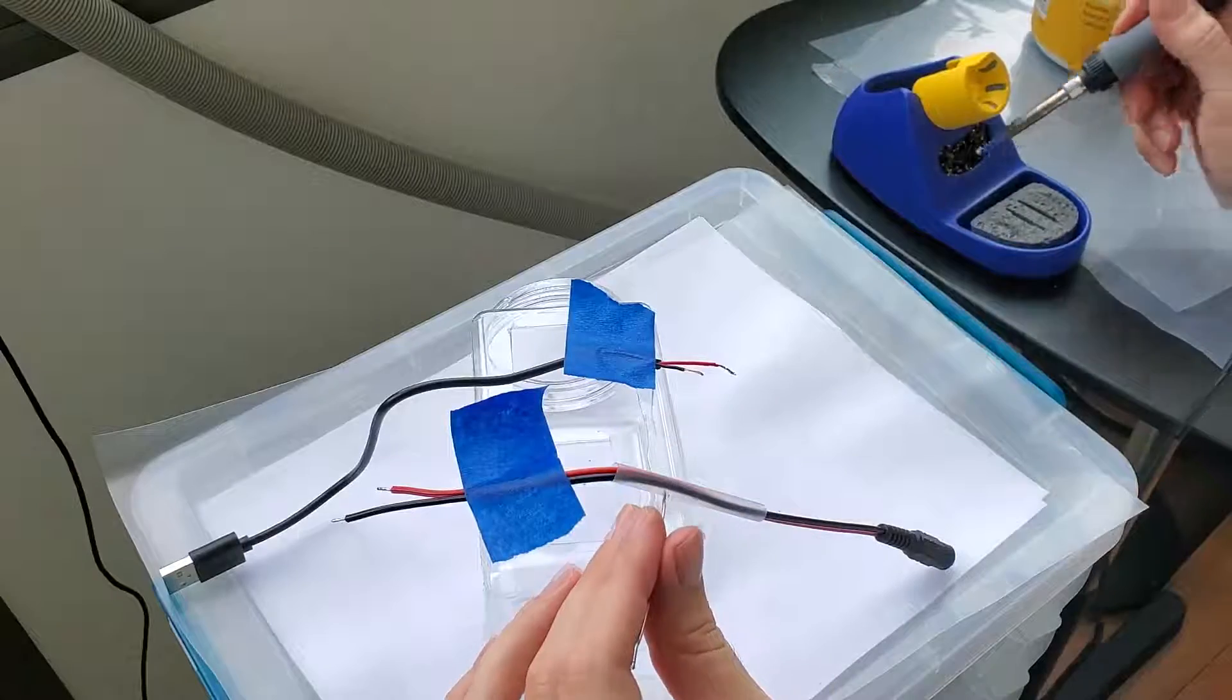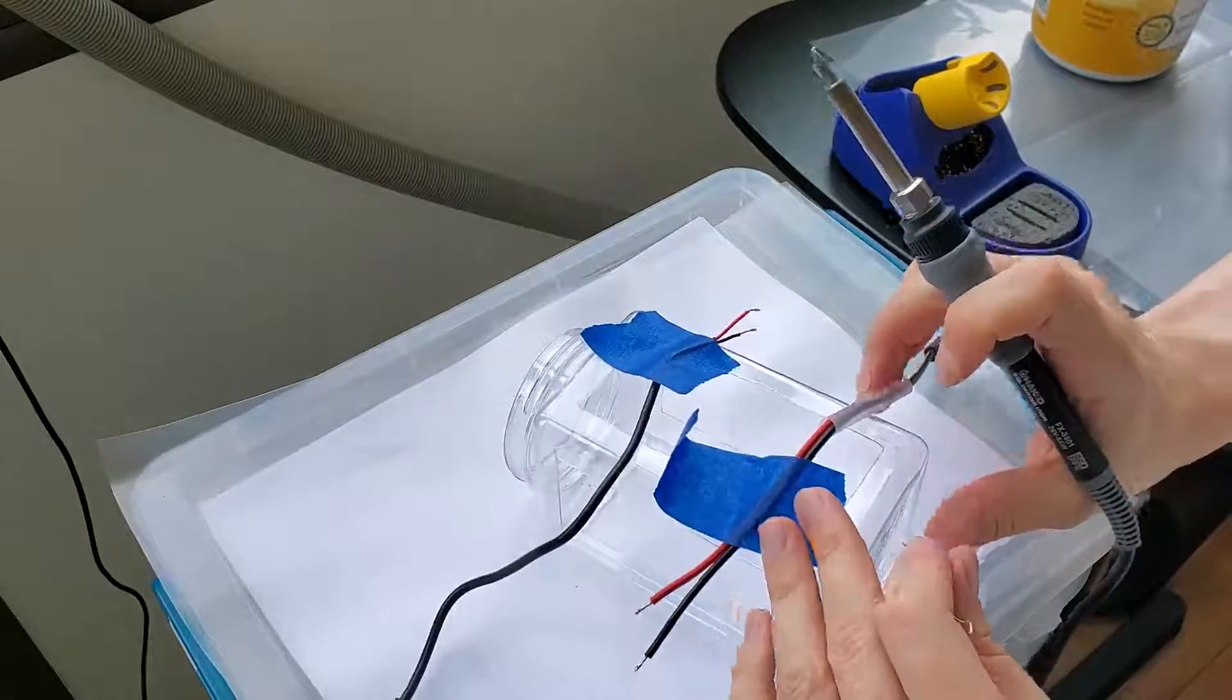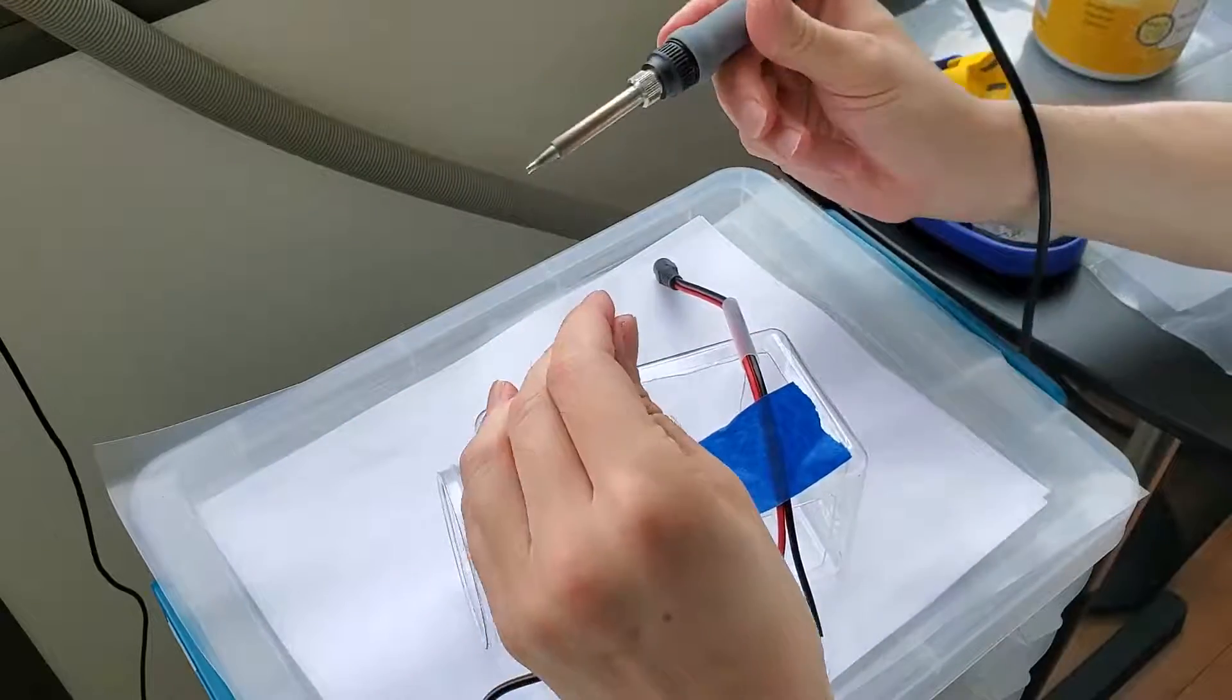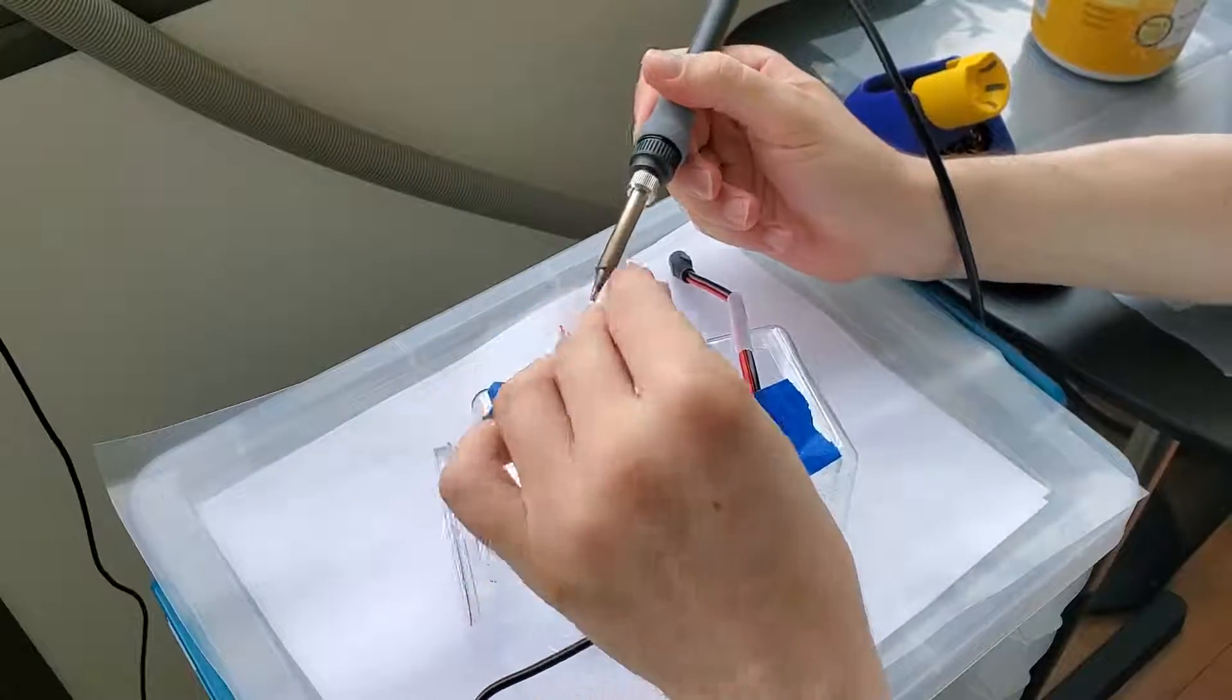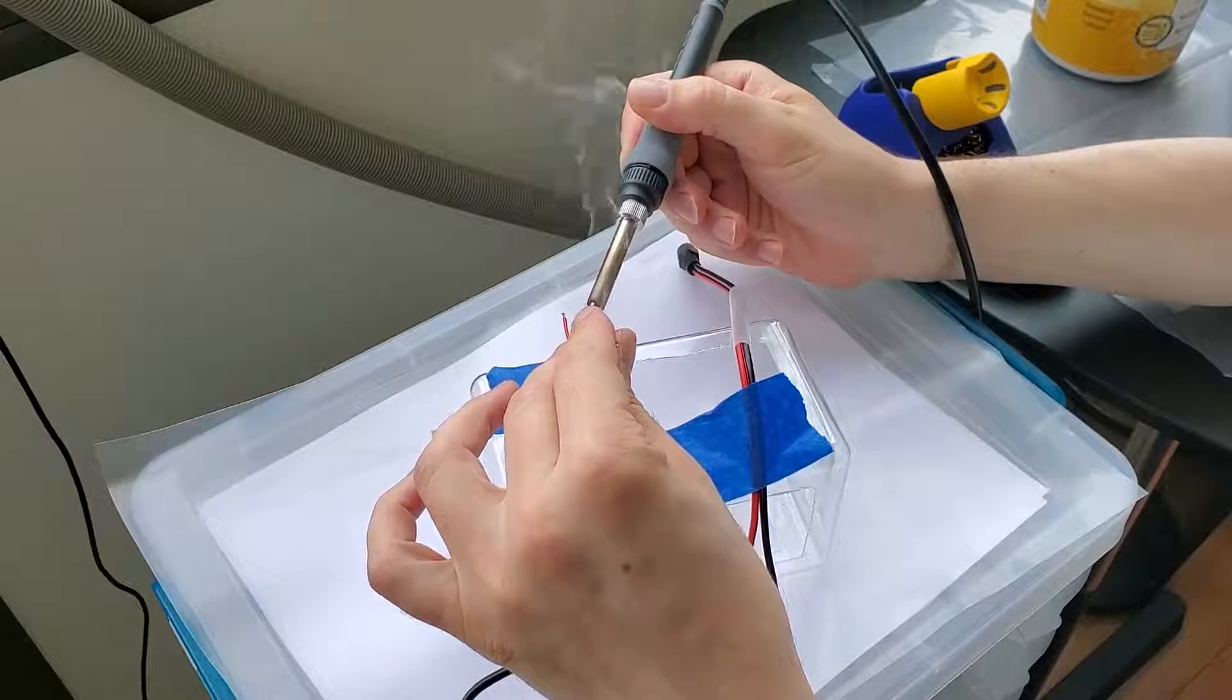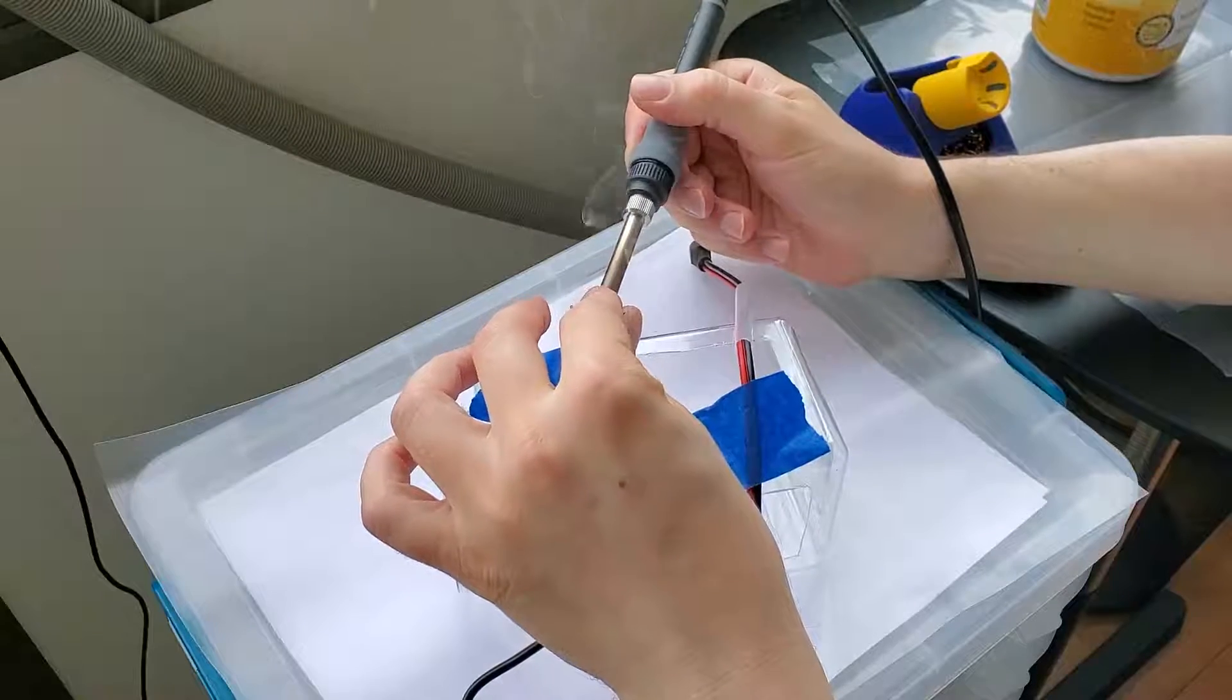But how quickly it transfers heat depends on how well that connection is formed with what I'm trying to solder. And that's where the little dab of solder on the soldering iron helps, because it allows that heat to transfer.